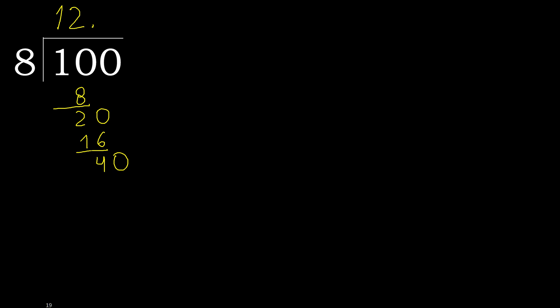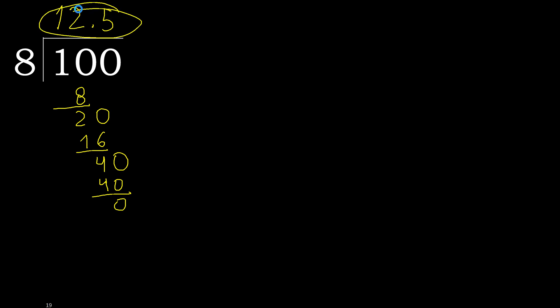8 multiplied by 6 is greater, so multiplied by 5. 40 is not greater. Subtract 0. 0, therefore finish. 100 divided by 8 is here.